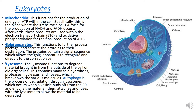Mitochondria: the mitochondrion is the source of energy for the cell. It functions for the production of energy or ATP (adenosine triphosphate). Specifically, this is the place where the Krebs cycle or TCA cycle occurs for the production of NADH and FADH.